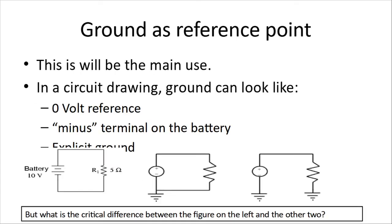Now ground as a reference point — this is the main use. It's a zero-volt reference. We generally consider it the minus terminal on a battery in circuits. If you look at these three circuits, where we've got a power supply on one side drawn as a battery on the left — a 10-volt battery — and drawn as an alternating current power supply on the right, we can see the first doesn't have ground, the second has one ground point, and the last has two. For most simple circuits without a lot of power, these are pretty much equivalent.